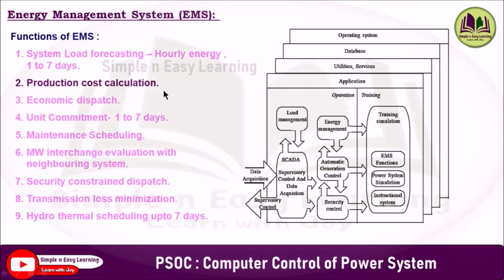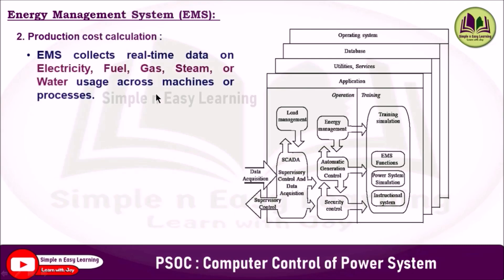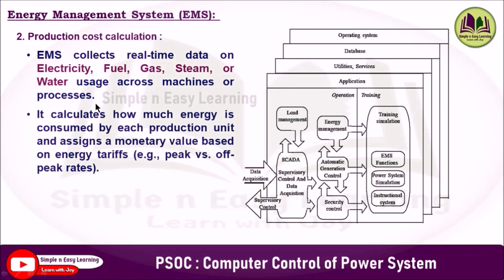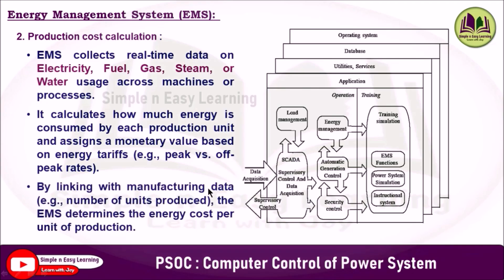The second function is production cost calculation. The energy management system collects real-time data on electricity, fuel, gas, steam, or water usage across machines or processes. It calculates how much energy is consumed by each production unit and assigns a monetary value based on energy tariff — for example, peak value tariff or off-peak rates. By linking with manufacturing data, the EMS determines the energy cost per unit of production.